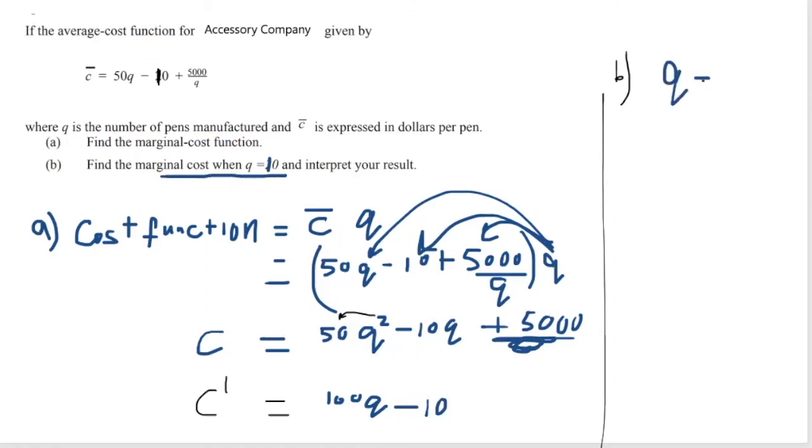So when Q is equal to 10, I am going to substitute into the marginal cost function. And that will give me the value. So I'll have 100 times 10 minus 10. 100 times 10 is 1000, and then minus 10, so I will have 990 dollars. And this represents the marginal cost.